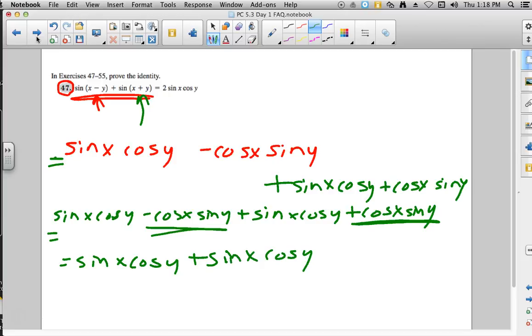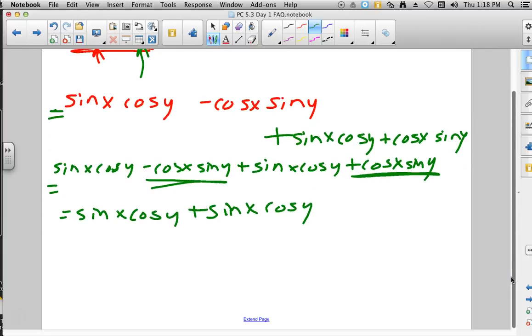And we have one with subtraction here. So we have a negative cosine of x sine of y and a plus cosine of x sine of y. So that leaves us with sine of x cosine y plus sine of x cosine y. Those are like terms. We can go ahead and add those. So if we have one of them and we add another one, now we have 2. So it will be 2 sine of x cosine of y. And that is exactly what we were supposed to get to match the right-hand side.